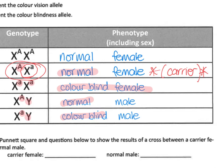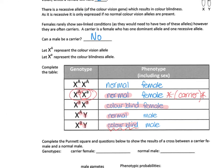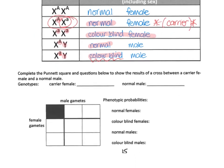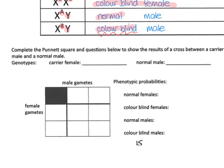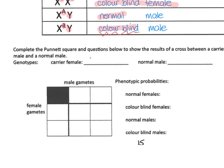A female could be a carrier, but could a male be a carrier? No. If he has a small a, he is colour blind. He can't be a carrier because he only has one X chromosome. Now, for the Punnett square question: complete the cross between a carrier female and a normal male. She has one capital A and one small a on her X chromosomes; he has one capital A. Fill in the gametes, do the cross, and work out the probabilities as fractions.